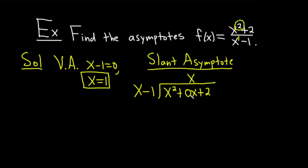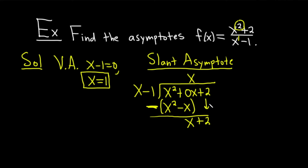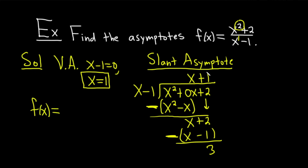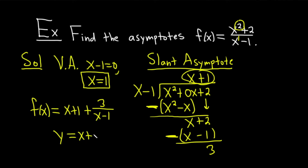Starting the long division: x times x gives x squared, and x times negative 1 gives negative x. After subtracting, x squared cancels and we get x. Bring down the 2. Then 1 times x is x and 1 times negative 1 is negative 1. After subtracting, x cancels and we get 3 as the remainder. So the function can be written as x plus 1 plus 3 over x minus 1. The slant asymptote is y equals x plus 1 — always the quotient.